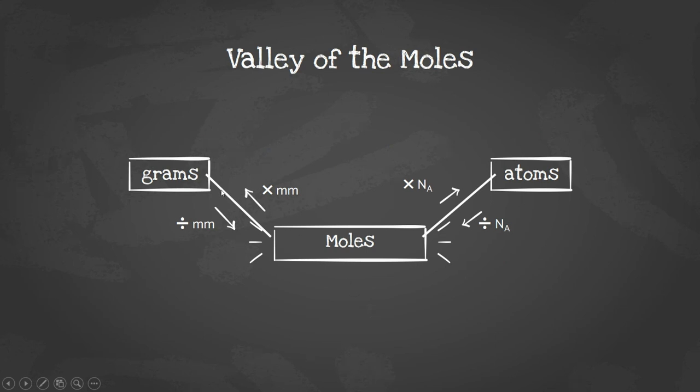Here's the valley of the moles, so this is just a little visual to help you see what we're going to be doing in our conversions. We have moles down here at the bottom, and grams and atoms on either side. To go up out of the valley, we're going to multiply on either side. The left has molar mass.